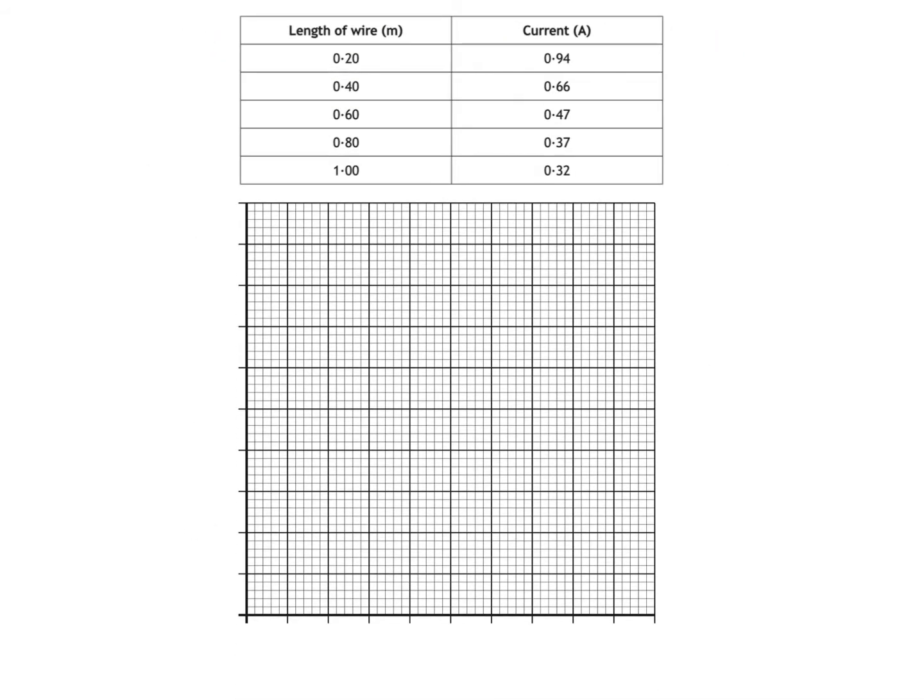Looking at the first column of the table you can see that the length of wire increases by 0.2 meters between readings. It must be then that this is the variable that's being changed by the student, what's called the independent variable.